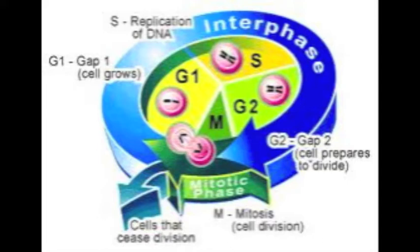We'll start with an overview of the cell cycle. There are three distinct components: interphase, mitosis, and cytokinesis. The cell spends the majority of the time in interphase. Here the cell grows and prepares to divide into two daughter cells in mitosis.